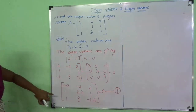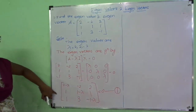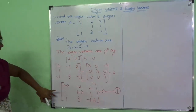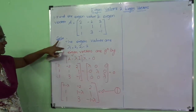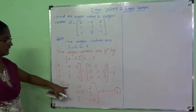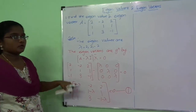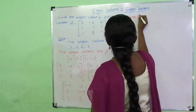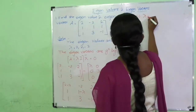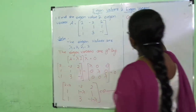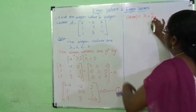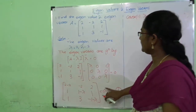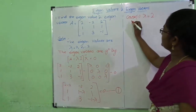Using this A minus lambda I, we are going to find the eigenvectors. We are going to substitute the first eigenvalue lambda equal to 2 and find the first eigenvector. Consider Case 1: the first eigenvalue is lambda equal to 2. I am going to substitute 2 in equation 1 in place of lambda.